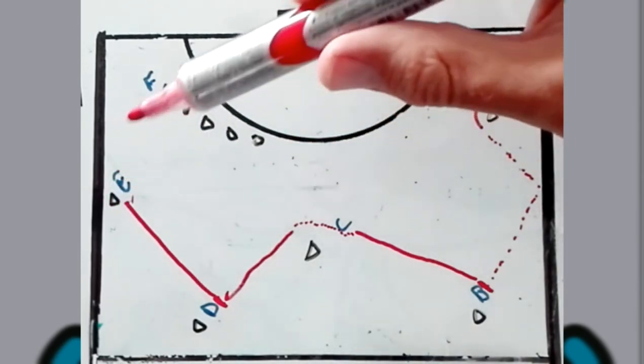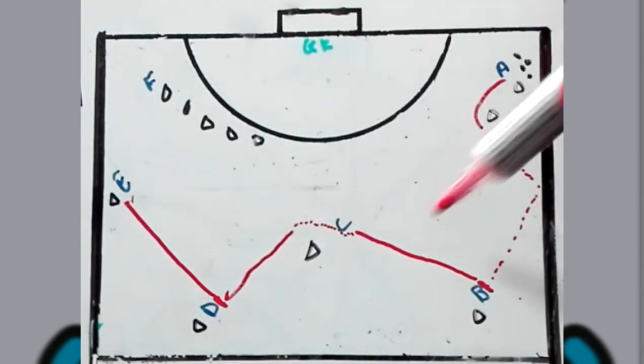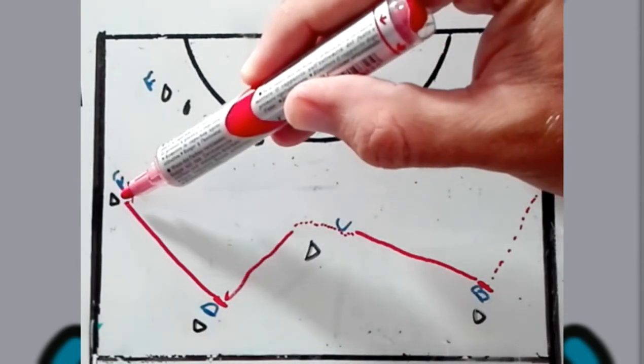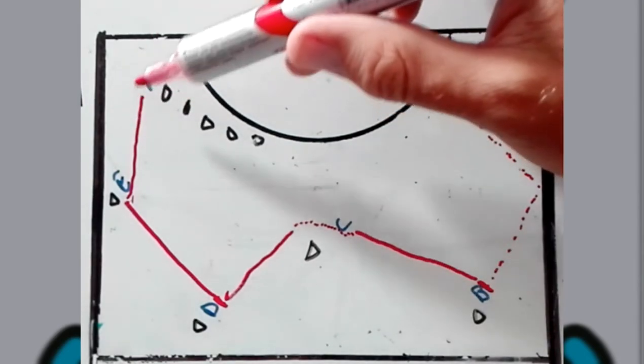He will do exactly the same as they will open up his body, so his back will be against the board so he can just receive it, see the whole field, so that he can pass the ball up to player F.